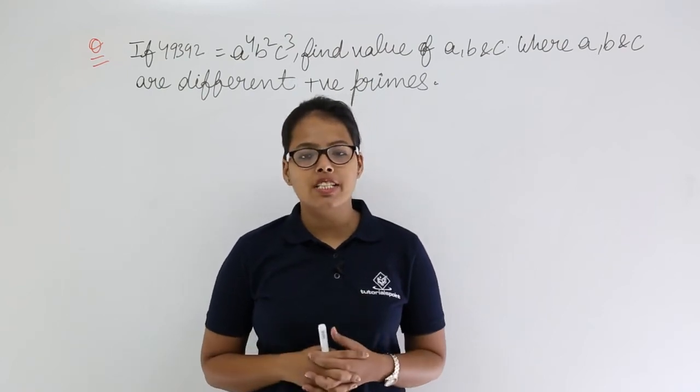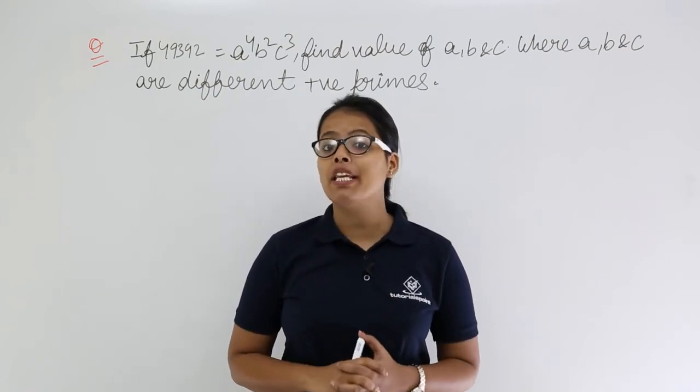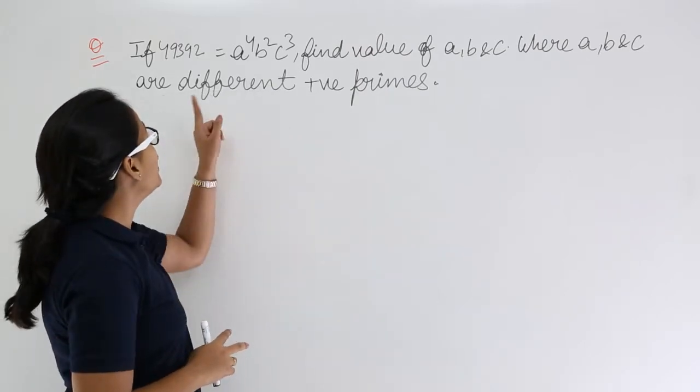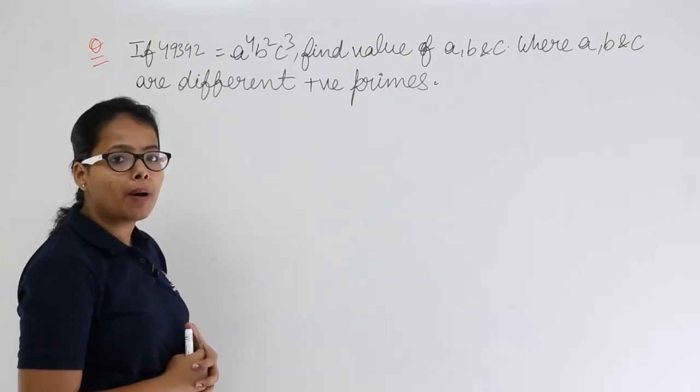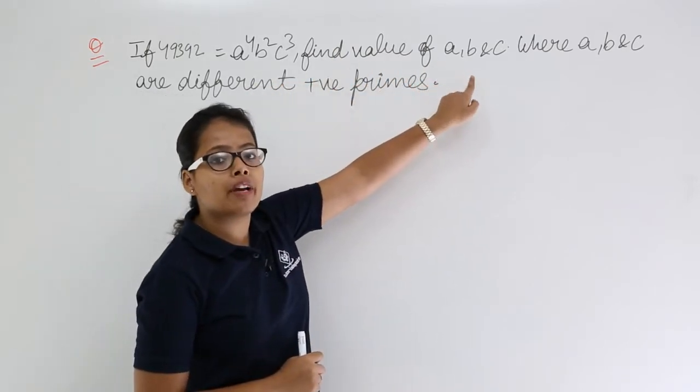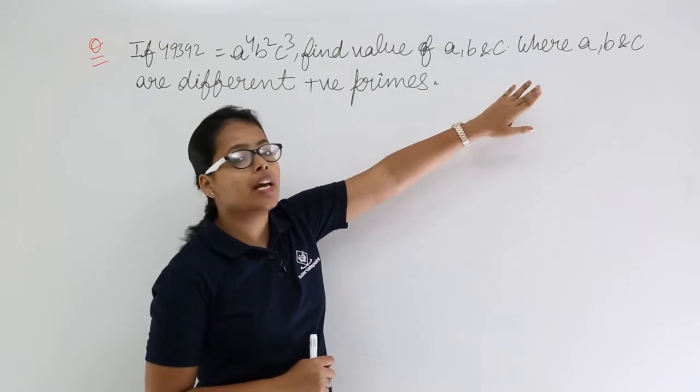Hello guys, let's solve this expression. It has been given that 49392 is equal to a to the power 4, b to the power 2, and c to the power 3. You need to find the value for a, b, and c, where a, b, and c